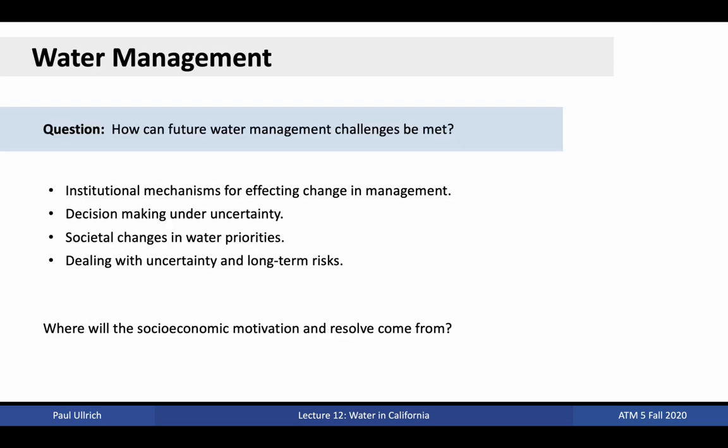So how can future water management challenges be met in California? There are many strategies that need to be pursued in unison, including institutional mechanisms for affecting change in management, the adoption of quantitatively grounded decision-making under uncertainty, societal changes in water priorities, and new strategies for dealing with uncertainty and long-term risks. California has made great strides with the adoption of SGMA legislation, but further actions are necessary to ensure we have sufficient water in an increasingly uncertain future. A key question is where the socioeconomic motivation and resolve will come from to enact these changes — and for that, education is key.